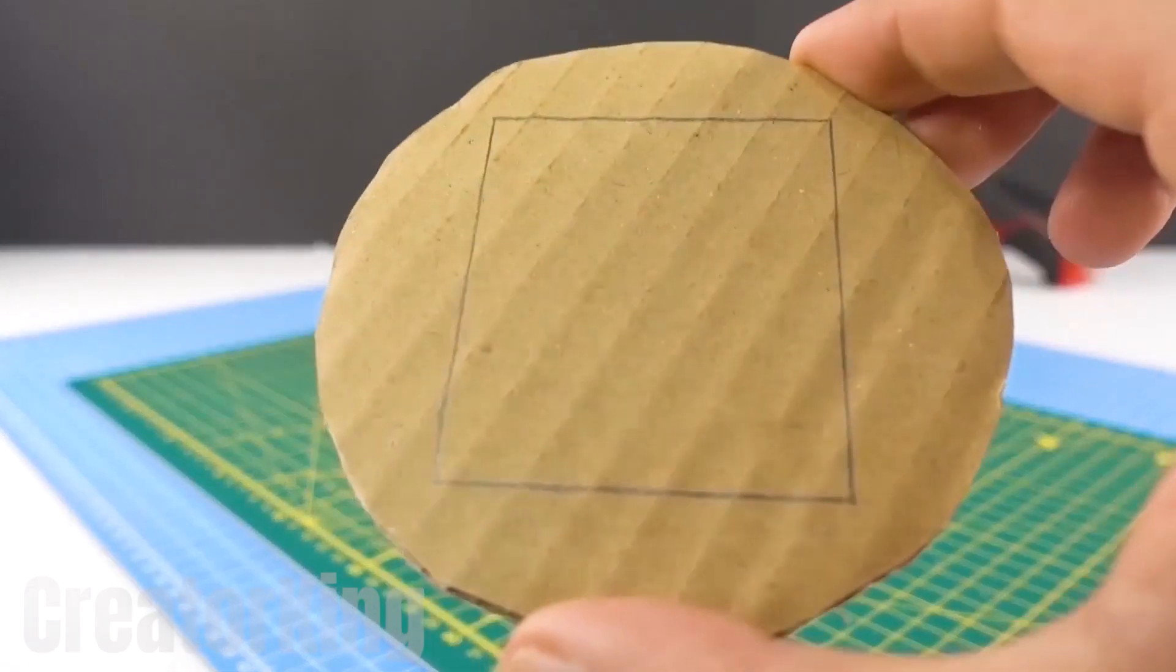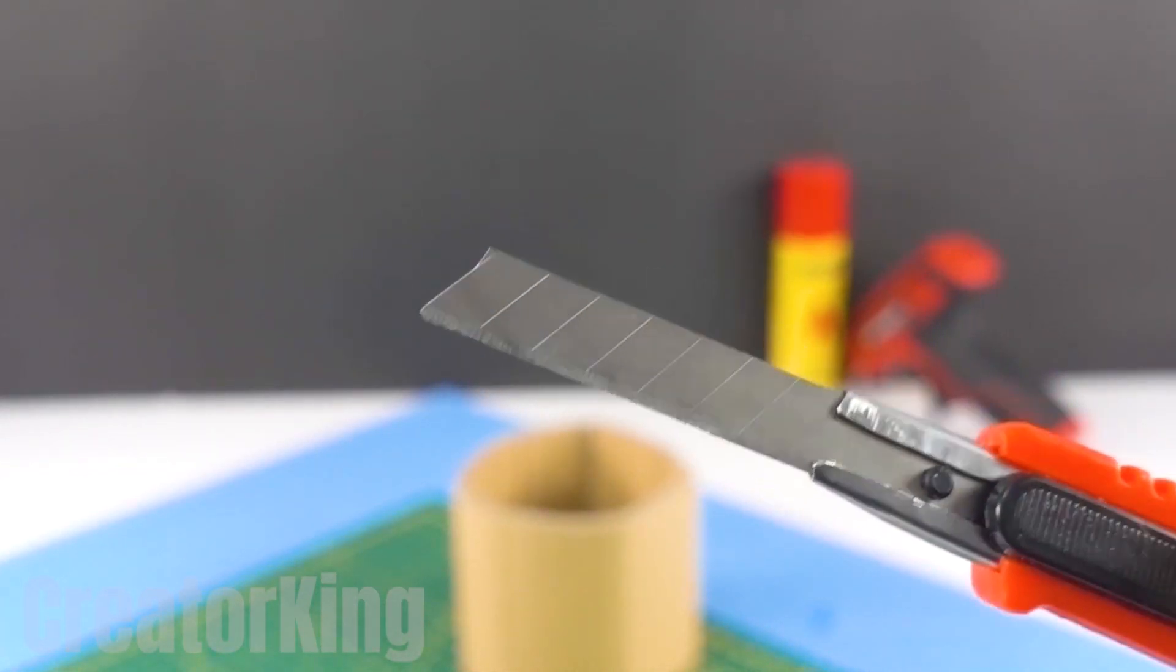Once we have the odd shape of a square inside a circle, cut it with a box cutter. Be careful not to slice your finger.